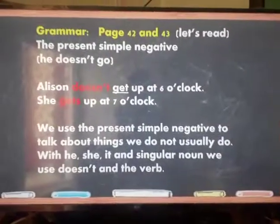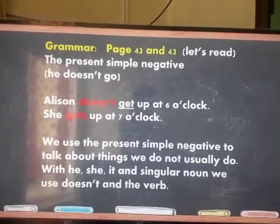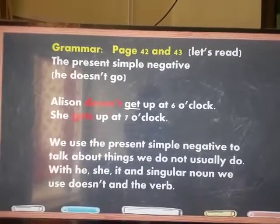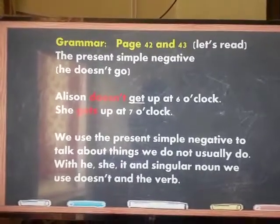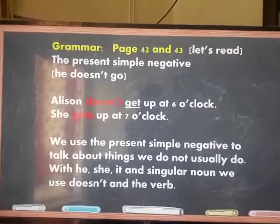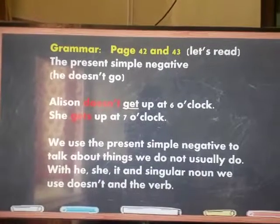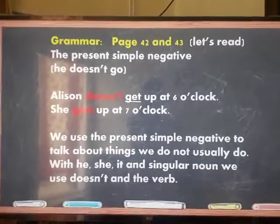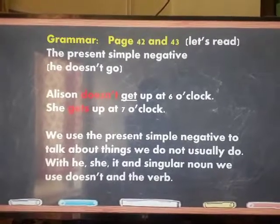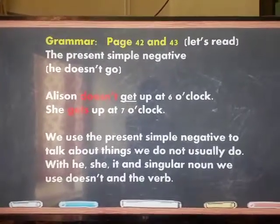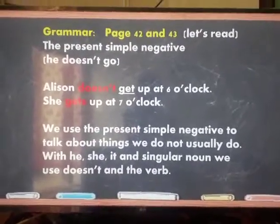For grammar, we will continue to study on pages 42 and 43. We will read about the present simple negative. For example: 'Allison doesn't get up at six o'clock — she gets up at seven o'clock.' We use the present simple negative to talk about things we do not usually do. With he, she, it, and singular nouns, we use 'doesn't' plus the verb.